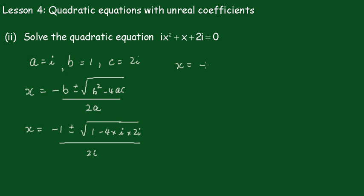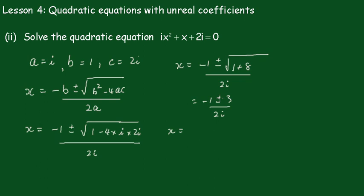So x equals minus 1 plus or minus square root of: this is 1, now this is going to equal 8i squared which is minus 8, but there's a minus sign here so it's plus 8. So x equals minus 1 plus or minus square root of 9, which is 3, all over 2i.